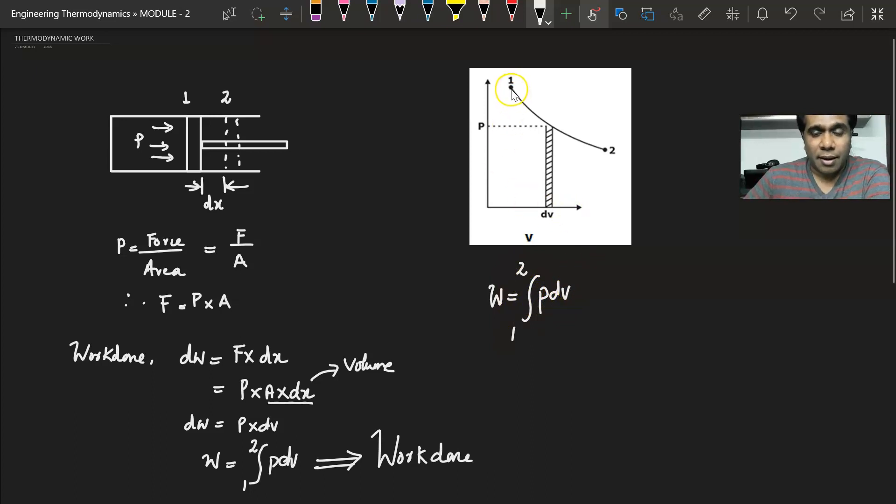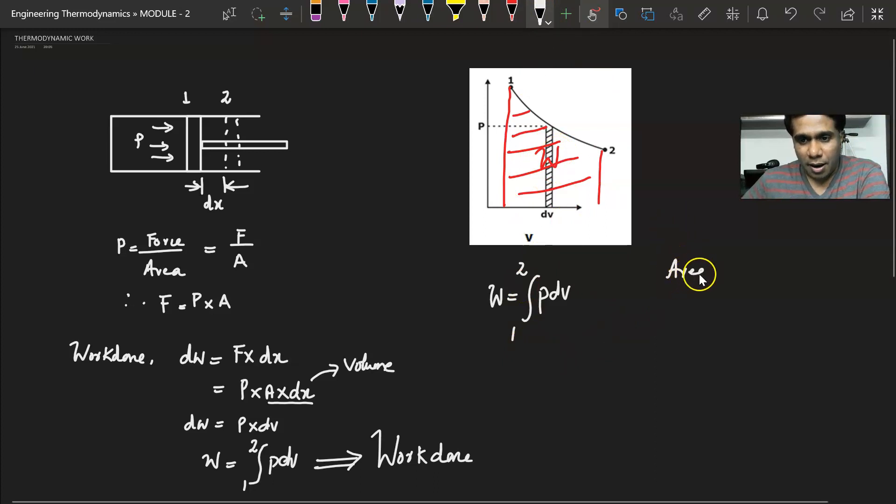the entire area under this curve, that is if I draw, if I take out this area, this entire area which is being covered by the PV diagram will give you the work done. Or in other words I can say the area under the PV diagram will give work done.